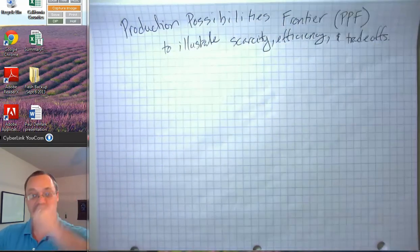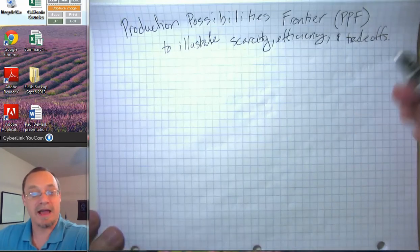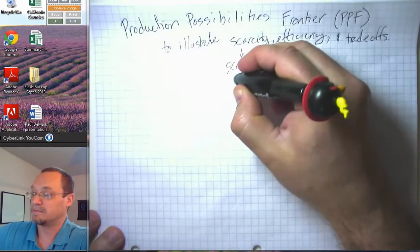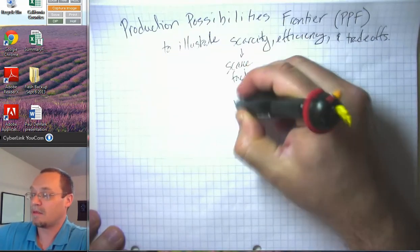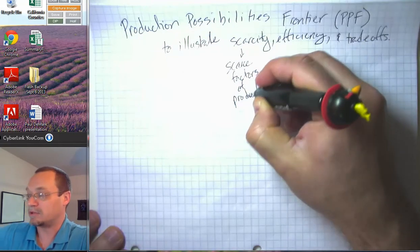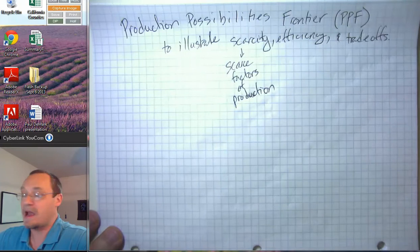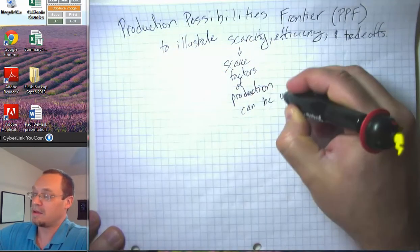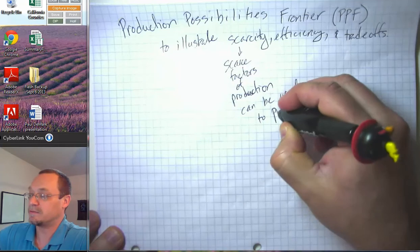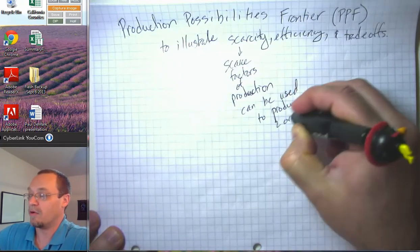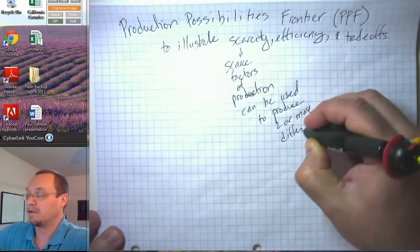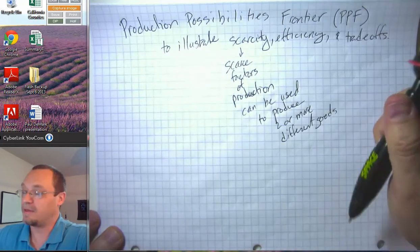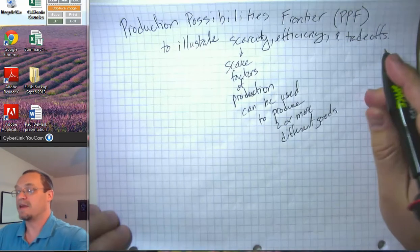The basic idea of the PPF model is generally that we have some scarce productive inputs, or scarce factors of production, and we can allocate those to producing two or more different goods. And naturally, if we use some of our factors of production to produce one good, then they're going to be unavailable for the other good. So that's the general overview.